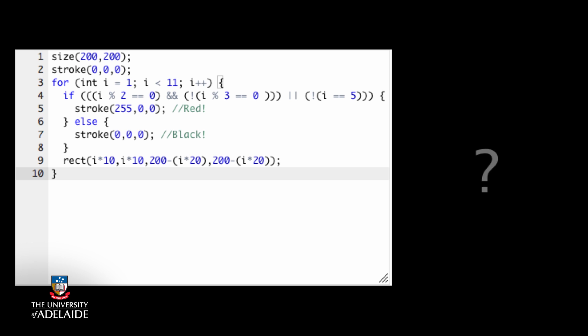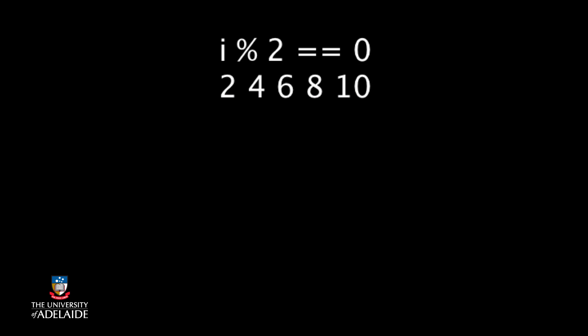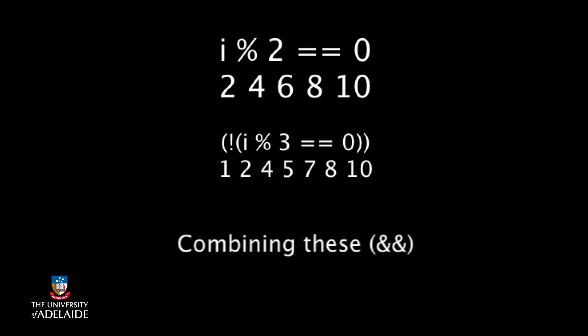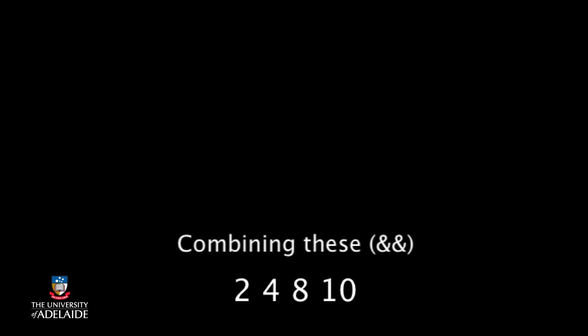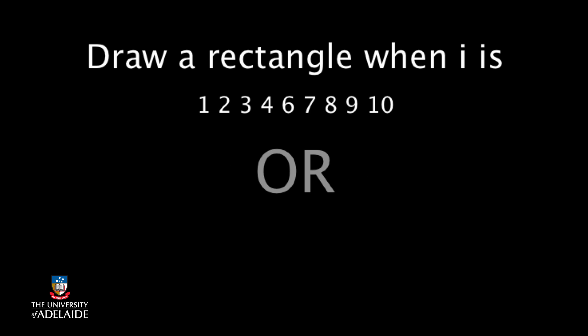How many red rectangles are you expecting? Let's break this down to work out what should happen and look at each condition in turn. Numbers divisible by 2. Numbers that are not divisible by 3. Combining these gives us, for the left hand side, but the right hand side is, which is every number that's not 5, this is true for, OR says we'll draw a red rectangle if one or the other is true, so we will draw red rectangles 9 times if we use an OR.